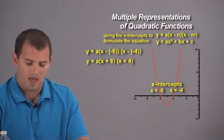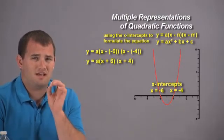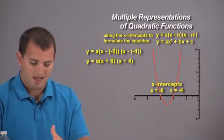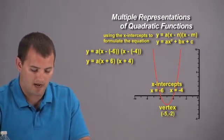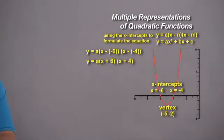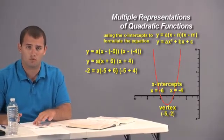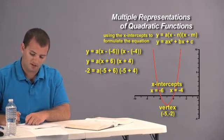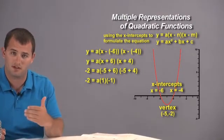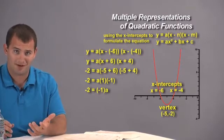Now we need to solve for a, so let's pick a point that lies on the graph. I'm going to use the vertex because it's very easy to read off. An important note: do not use the x-intercepts — the equation won't work out. You need to use a point other than those. The vertex is at the point (negative 5, negative 2). Plugging in, we get: negative 2 equals a times (negative 5 plus 6) times (negative 5 plus 4), which simplifies to negative 2 equals a times 1 times negative 1, giving us negative 2 equals negative a.